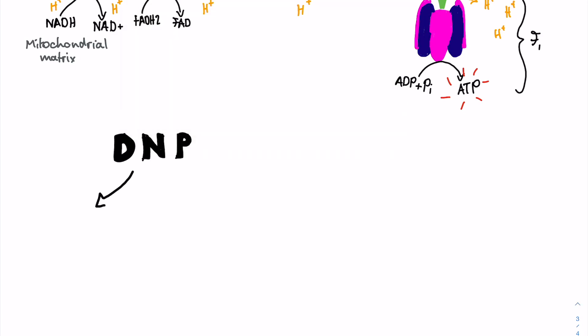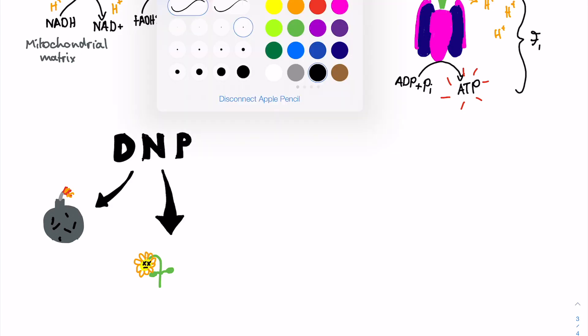Well, for starters, DNP is extremely explosive. It was used in bombs during World War I, and it also used to be used as a very effective pesticide and herbicide until the end of the 20th century. So in other words, it's not something that you should be putting in your body.